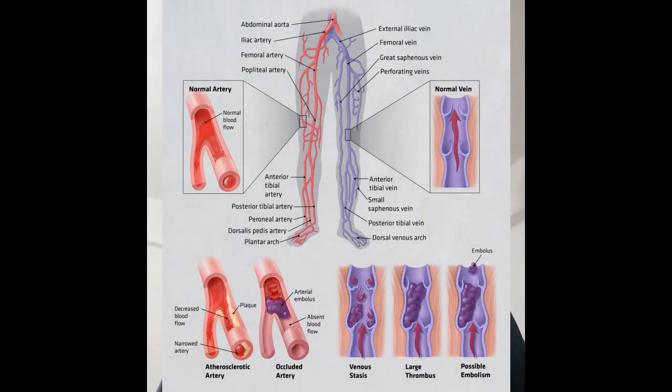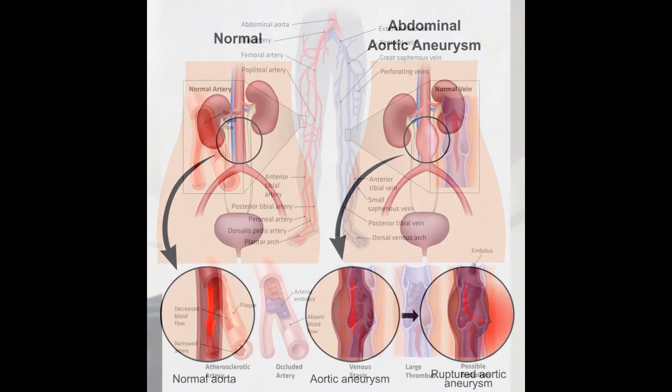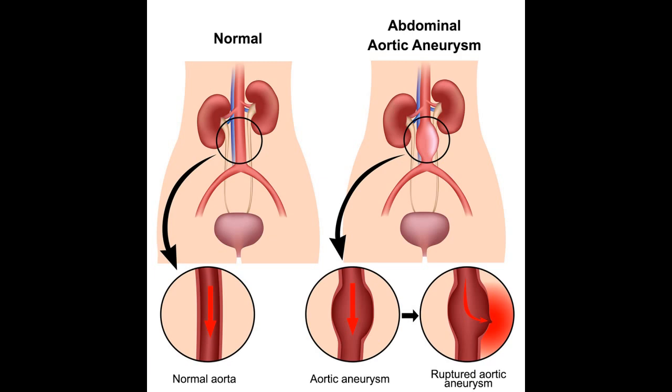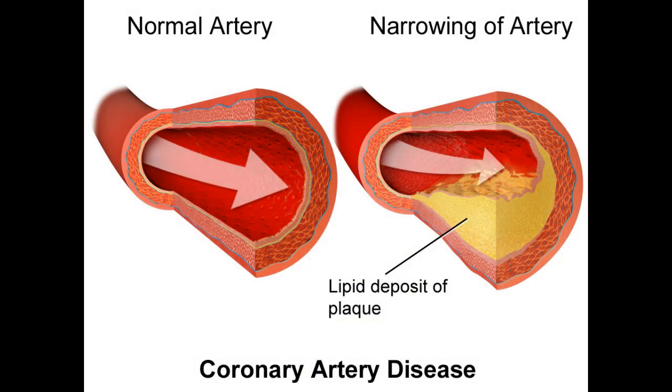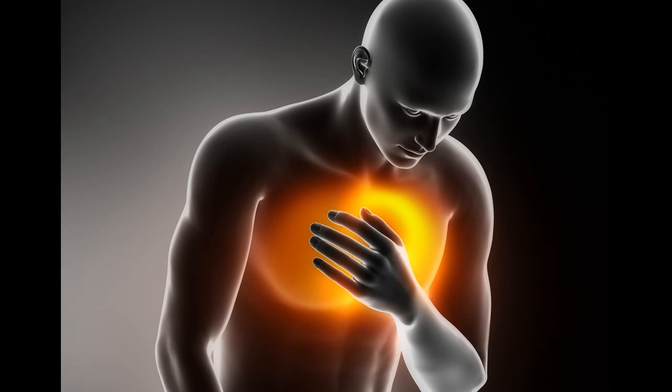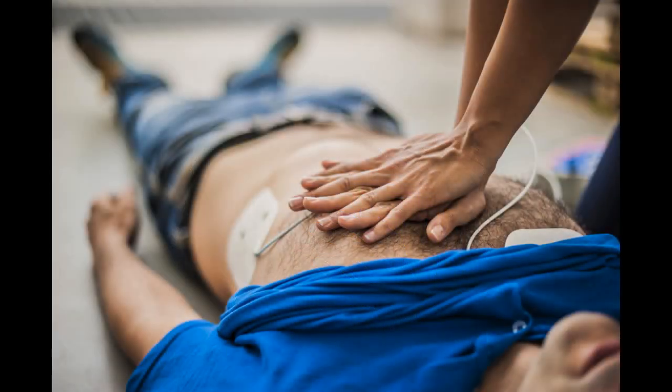This may lead to complications like lower limb ischemia — blockage of the arteries of the lower limb. Sometimes arteries like the abdominal aorta may even rupture, leading to sudden death. The most common cases are coronary heart disease, chest pain, heart attack, sudden cardiac death, and heart failure.